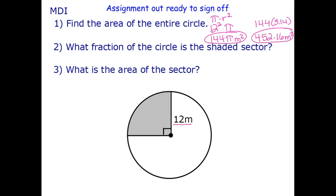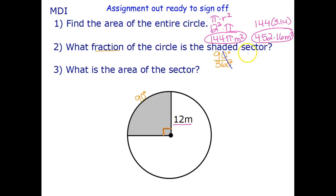The second thing we need to do is figure out what portion of the circle is the shaded sector. We can see that there's a square in the corner, which means this is a 90-degree arc — because the arc equals the central angle. Talking about the fraction, we do part over whole: 90 over 360. Since both end in zero we can reduce, giving us 9 over 36. Dividing both by 9, we get one-fourth. So the shaded portion is one-fourth of the whole circle.